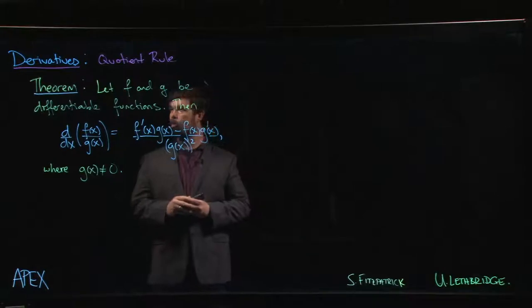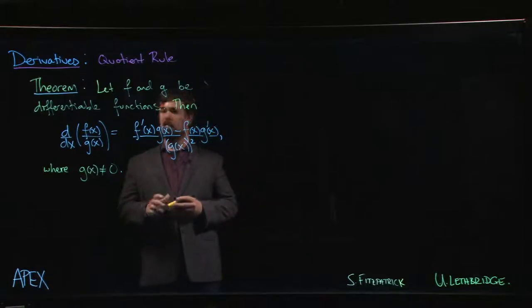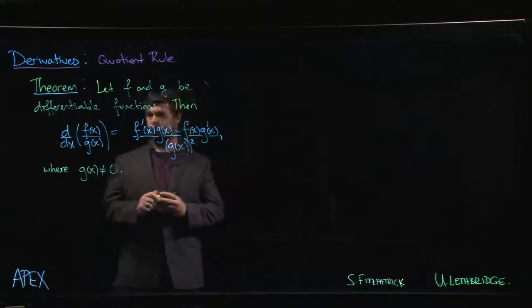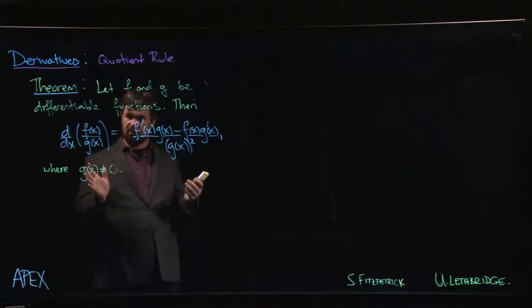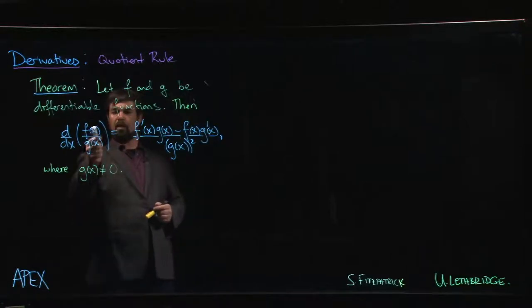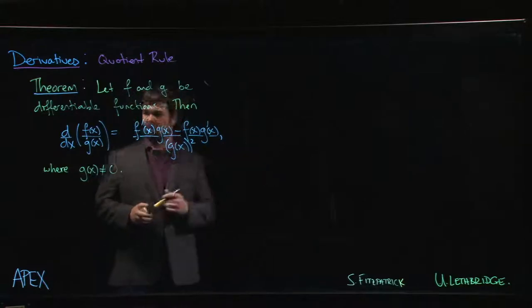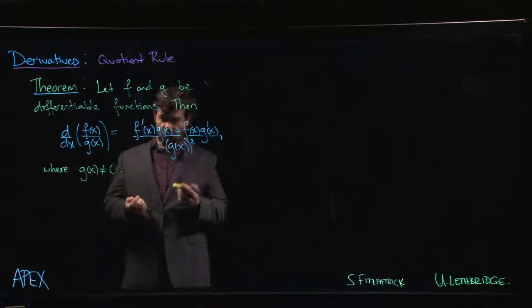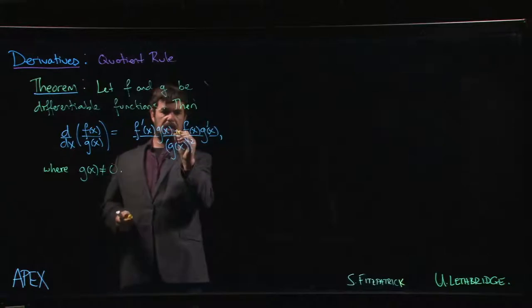So we're ready to move on to the quotient rule. The quotient rule looks somewhat similar to the product rule. The main difference is, of course, now we're dealing with a quotient of two functions instead of a product of two functions. On this side you'll notice that there are two very obvious differences, one being that